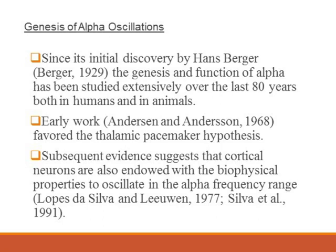Early work favored the thalamic pacemaker hypothesis. Namely, it was thought that alpha oscillations were generated in the thalamus. Then it got propagated to the cortex through thalamocortical axons. Then we pick it up with our scalp electrodes.